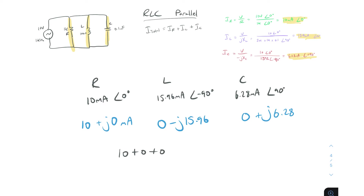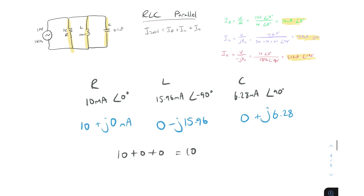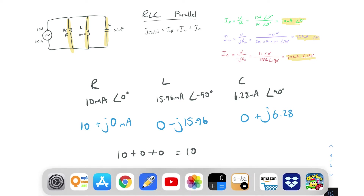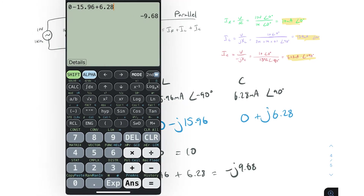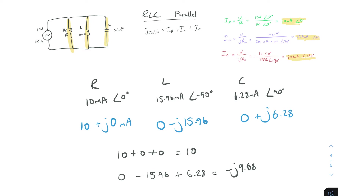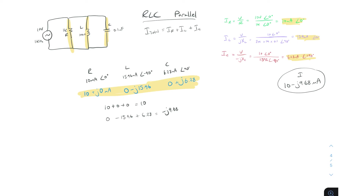Adding them together: real parts are 10 plus 0 plus 0, which is 10. For the imaginary parts: 0 plus minus 15.96 plus 6.28. Using a calculator: 0 minus 15.96 plus 6.28 gives minus j9.68. So our total current in rectangular form is 10 minus j9.68 milliamps.